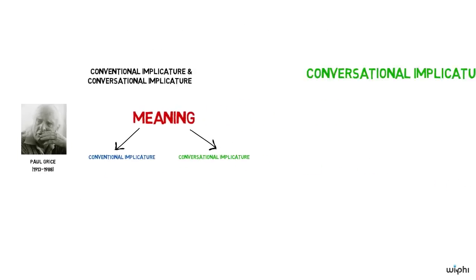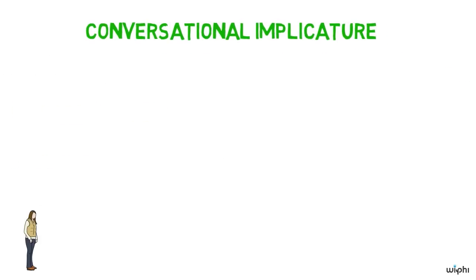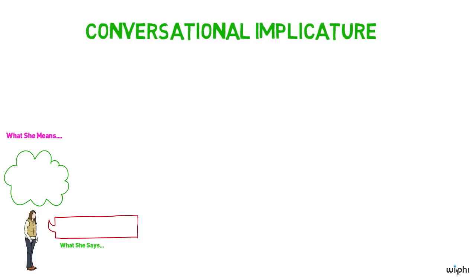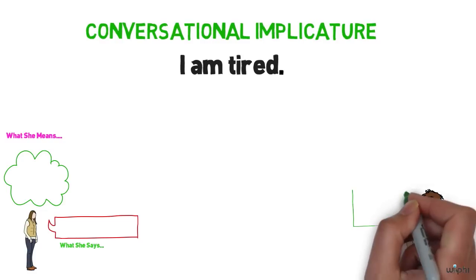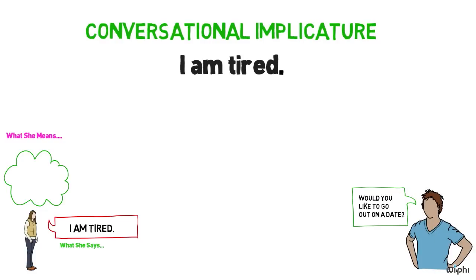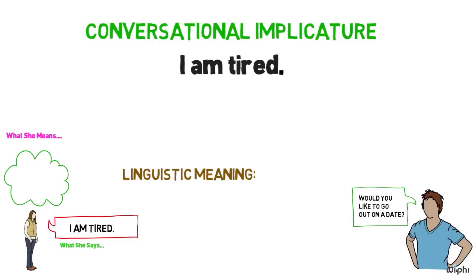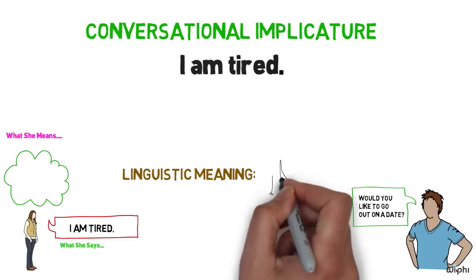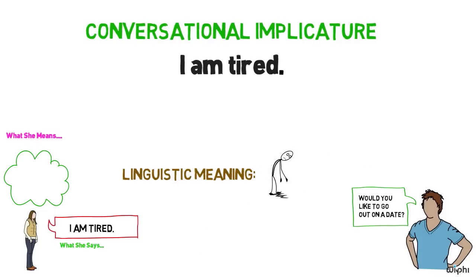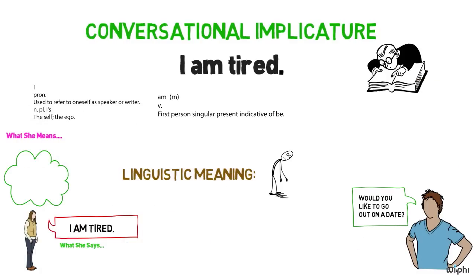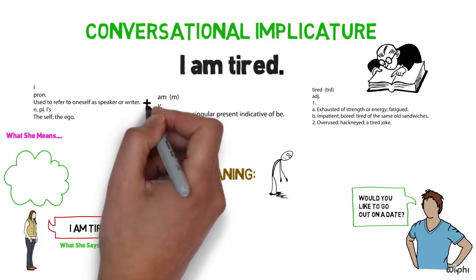A good starting place is to notice that there's often a difference between what a speaker says and what a speaker means. Take the sentence: I'm tired. Someone asks you to go out on a date, and you say I'm tired as a response. The linguistic meaning of what you have said is just that you are tired — the meanings of the words I, am, and tired are taken literally, combined into a sentence, giving you the straightforward meaning simply that you are tired.